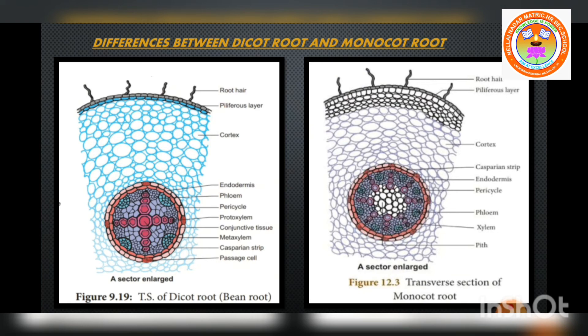Let me now present the differences between the anatomy of dicot root and monocot root. Just see the picture — transverse section of dicot root and transverse section of monocot root. In both cases, the rhizodermis and cortex are similar. There are some differences in the stele region.